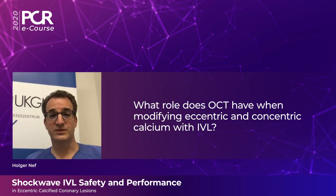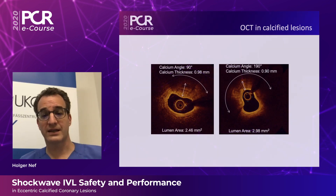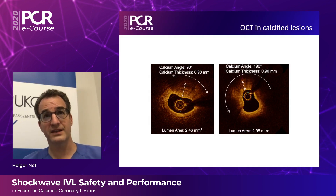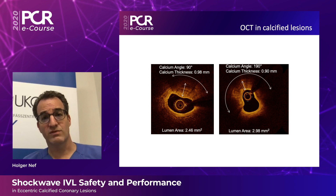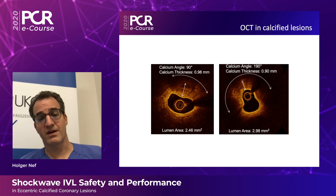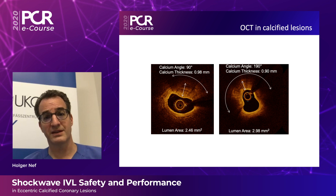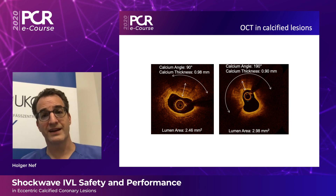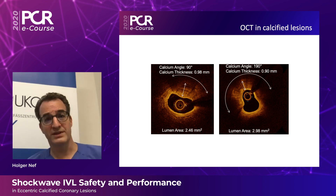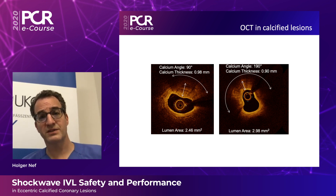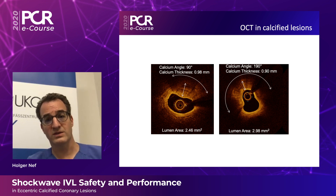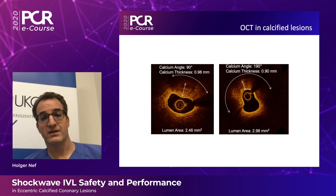OCT allows you to analyze the calcium depth, arc, and length of calcific lesions much more accurately than by angiography alone. We know from risk stratification that if a lesion has more than 5 mm in length, more than 0.5 mm in depth, and an arc greater than 180 degrees, this is a predictor for under-expansion of the stent. This information from OCT allows you to develop an intravascular lithotripsy strategy when it is needed.